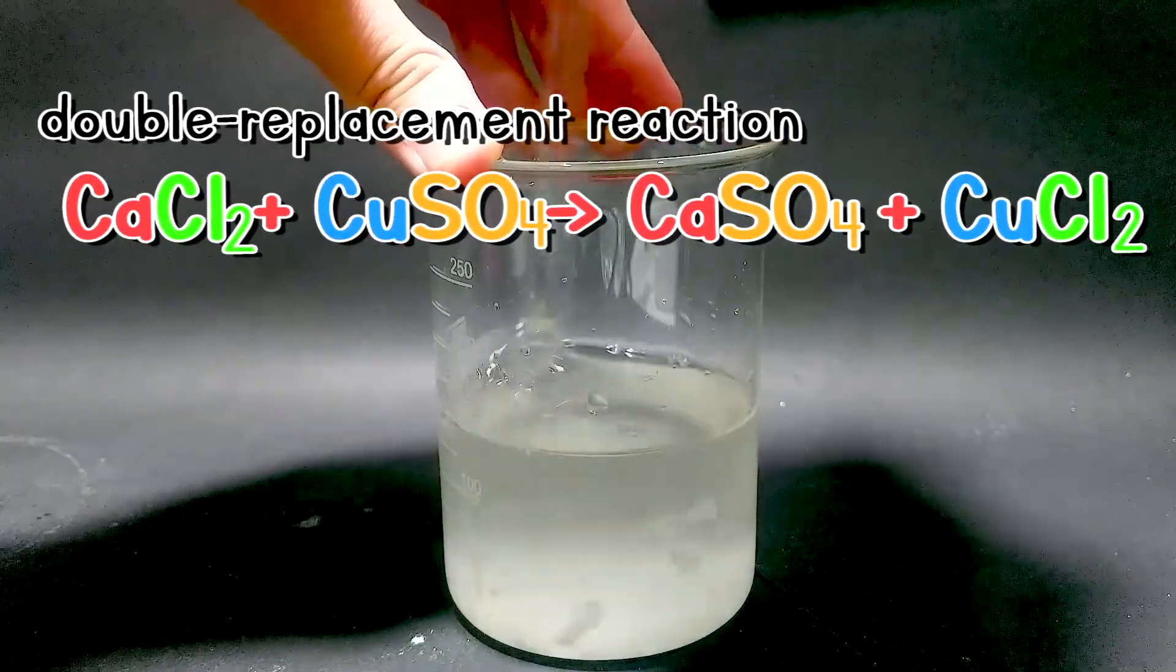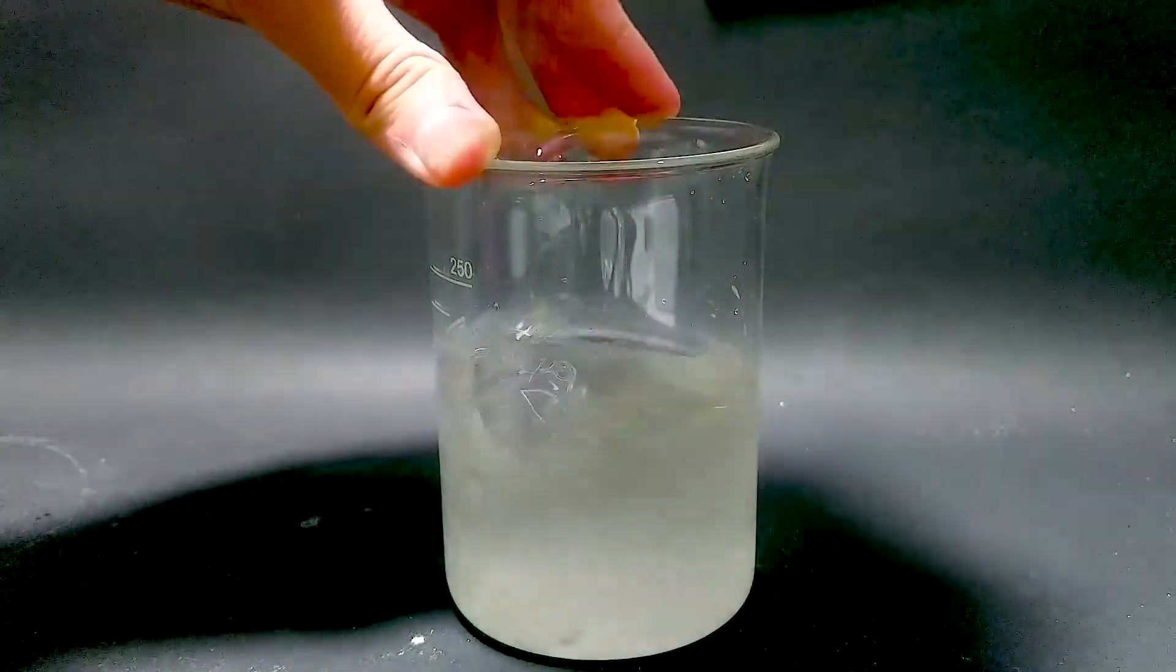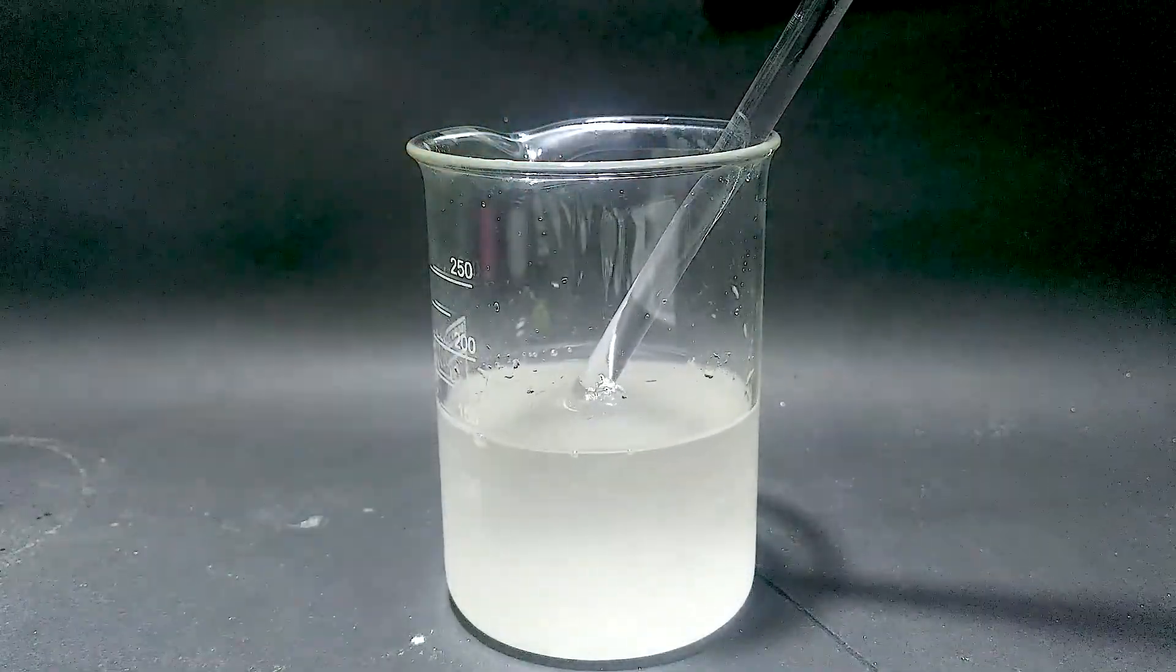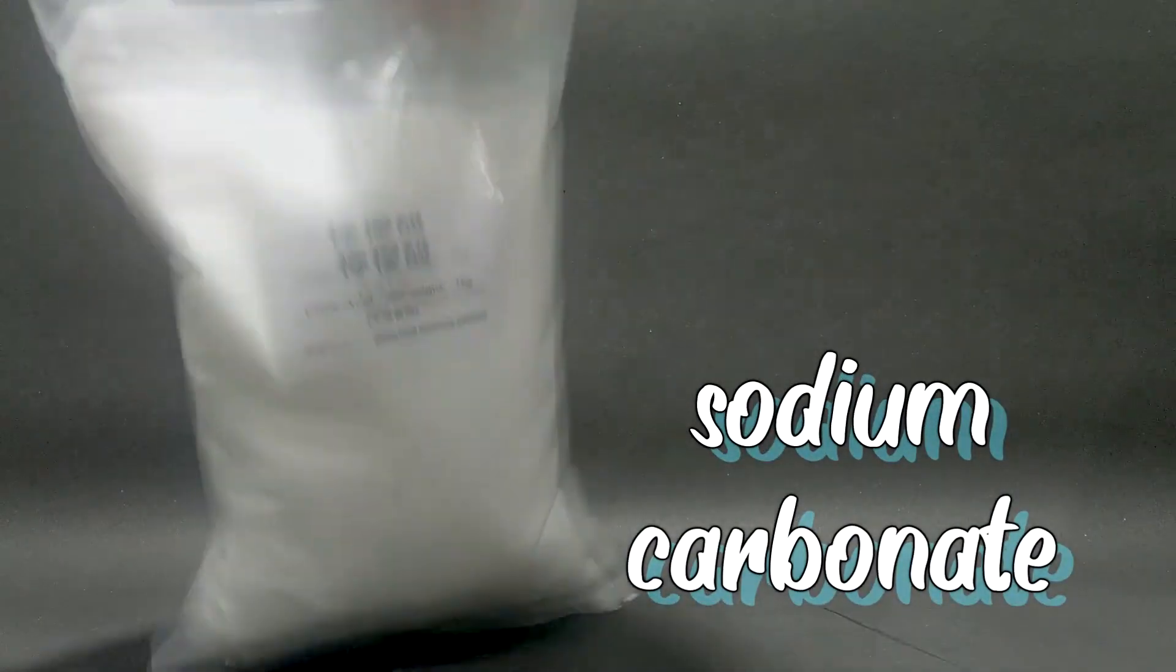Therefore, by double replacement reaction, we can synthesize them pretty easily. So let's directly jump into the reaction. To make sodium citrate, we need to prepare two ingredients: sodium carbonate and citric acid.